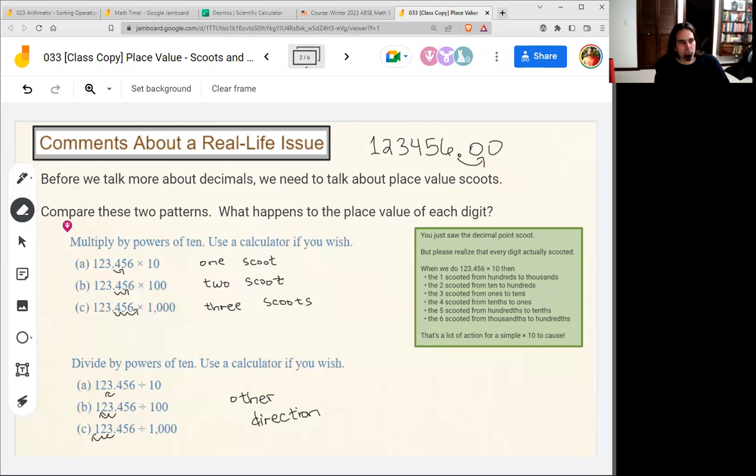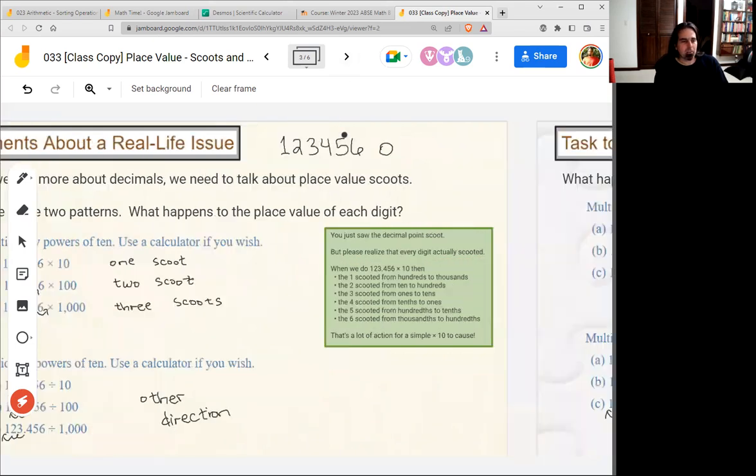If I did a decimal point scoot, that makes a zero appear on the end. That six is no longer six ones. Now it's six tens. It's not six, it's 60. It just looks like a six, but really it means 60. So every digit scoots. Keep that in mind.